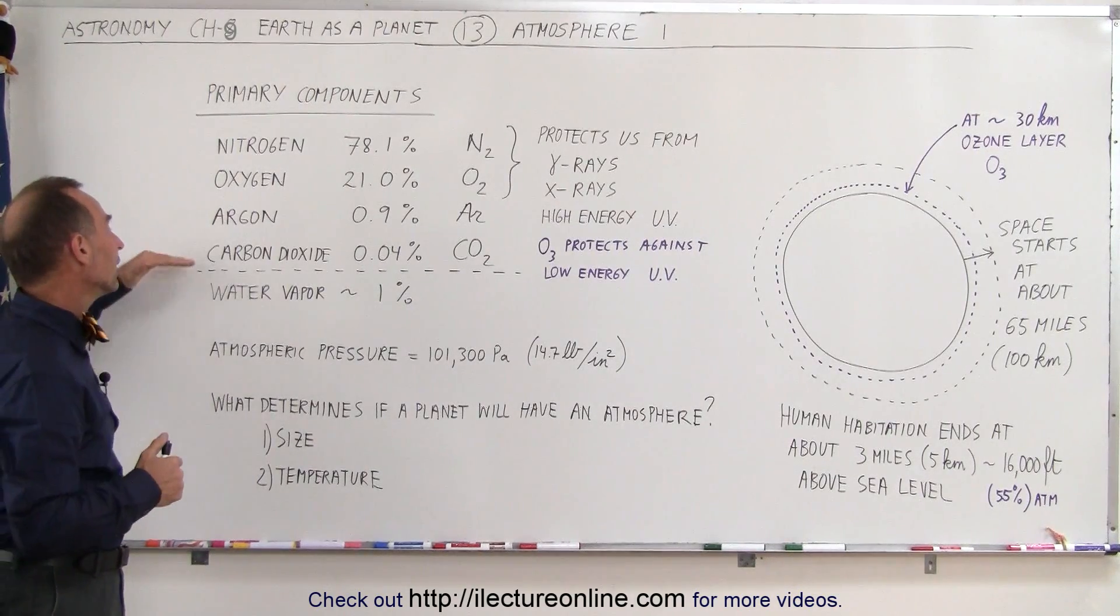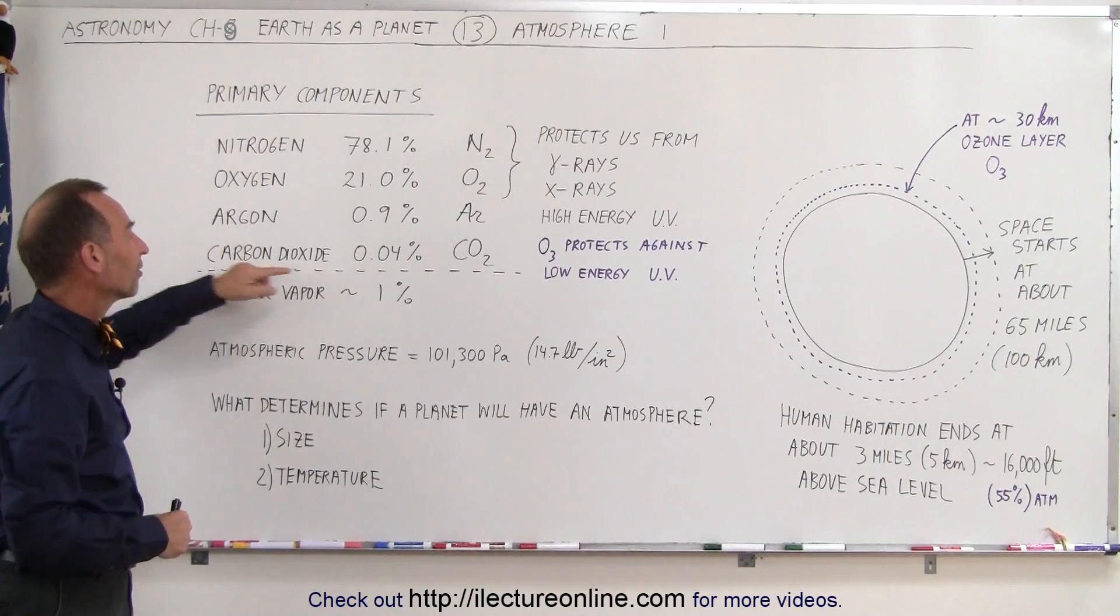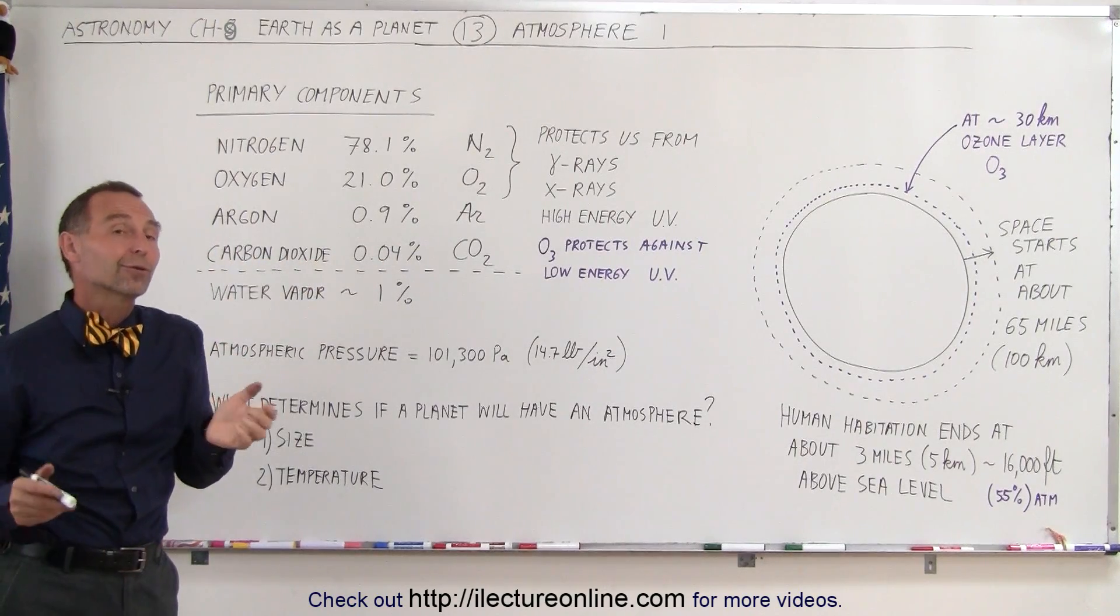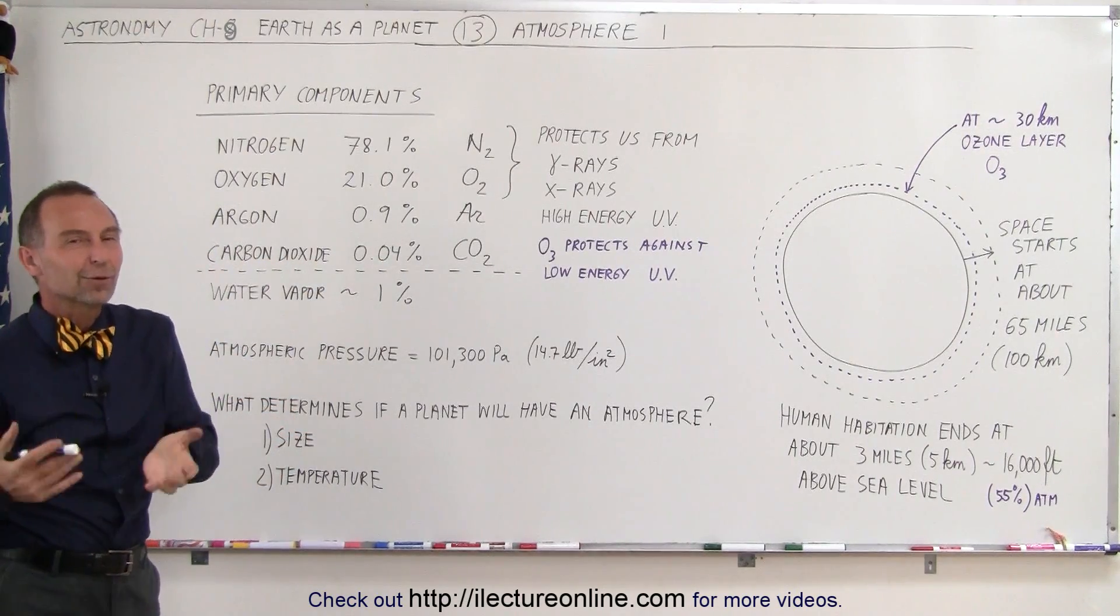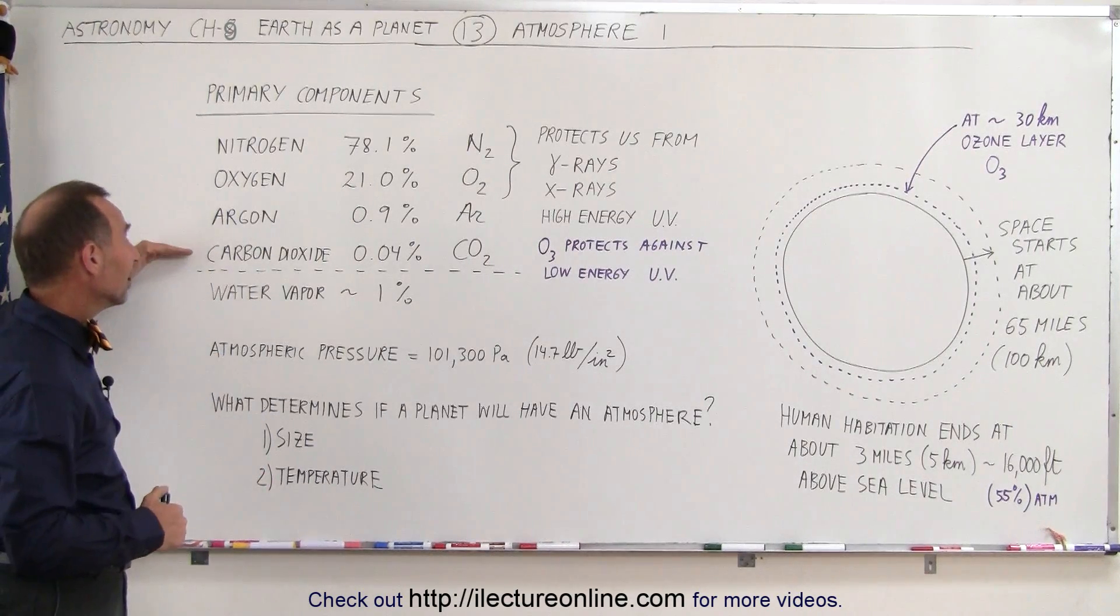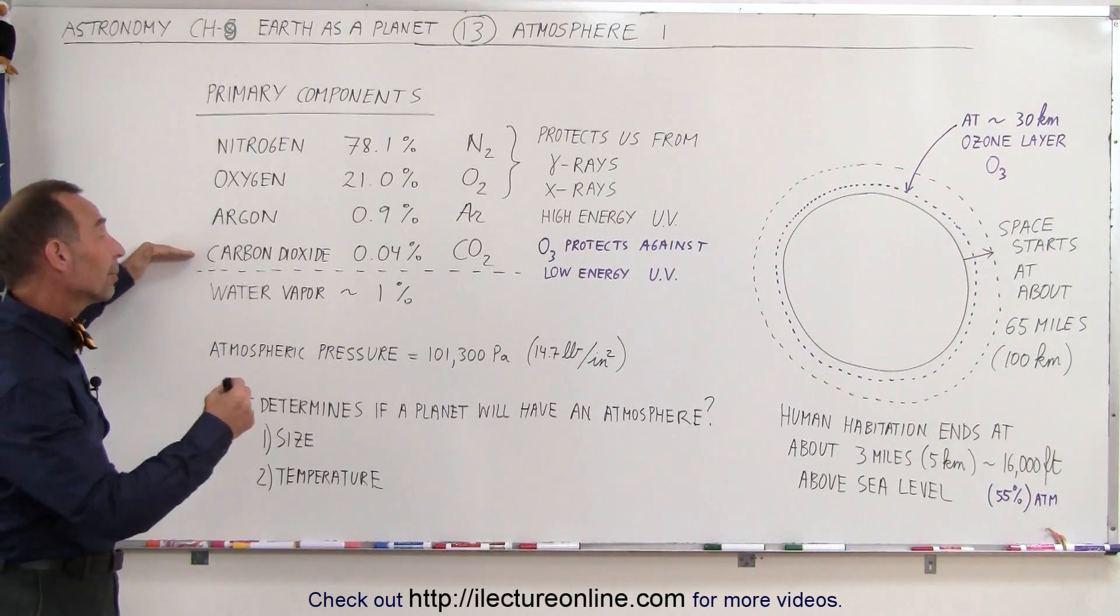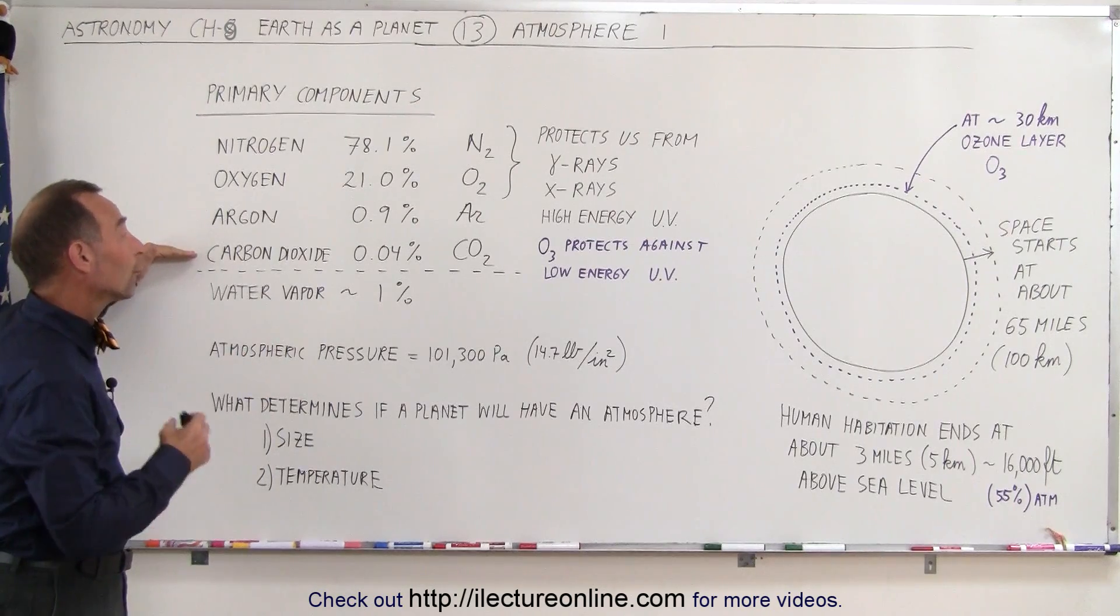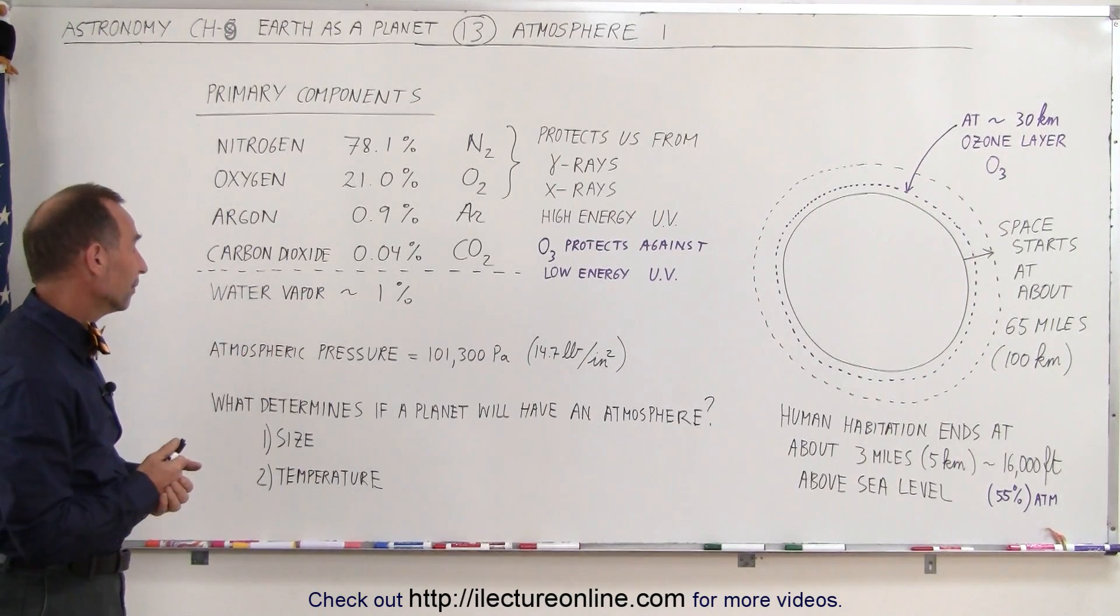The next component in the atmosphere is carbon dioxide. It's at 0.04%, and carbon dioxide is in the news a lot because it's one of the greenhouse gases, and you can see that carbon dioxide only makes up a very small percentage of the total contents of the atmosphere.